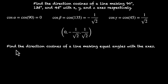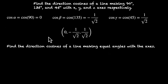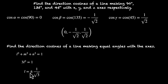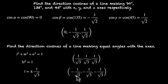One last problem: find the direction cosines of a line making equal angles with the axes. If the angles are equal, the cosines must be equal, so L = M = N. Using L² + M² + N² = 1, we get 3L² = 1, so L = ±1/√3. This gives two sets: (1/√3, 1/√3, 1/√3) and (−1/√3, −1/√3, −1/√3), corresponding to the two opposite directions along the line.